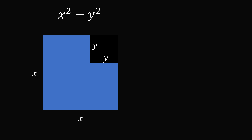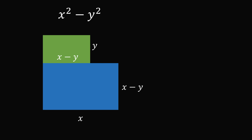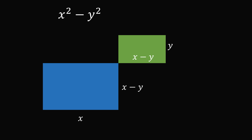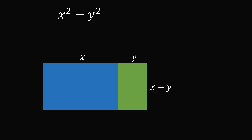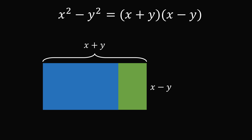Let's solve for the area in another way geometrically by breaking this shape into different rectangles. One rectangle has sides y and x minus y. The other rectangle has dimensions x and x minus y. We slide and join these two rectangles to form a single rectangle with side lengths x minus y and x plus y. So x squared minus y squared equals (x plus y)(x minus y). That's where the formula comes from.